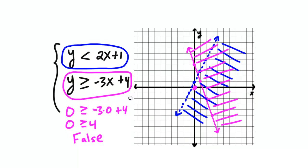Okay, so the final solution for the system of inequalities is where the two colors overlap. So let's highlight that right here.